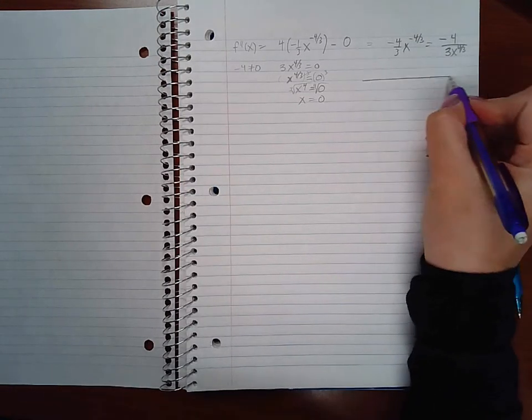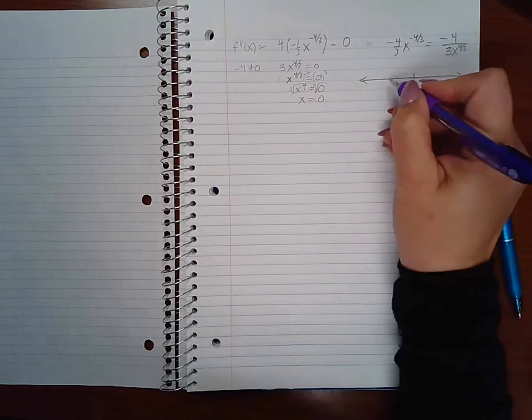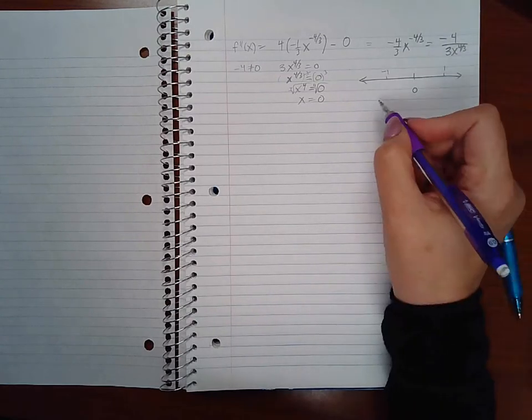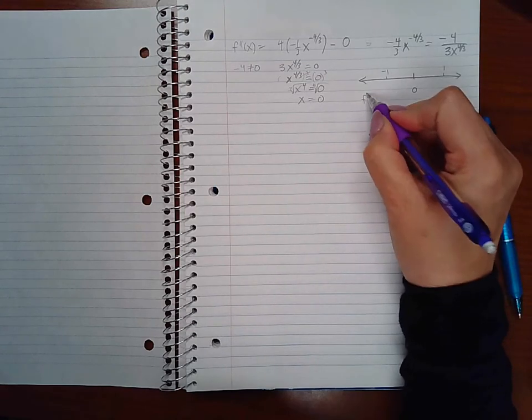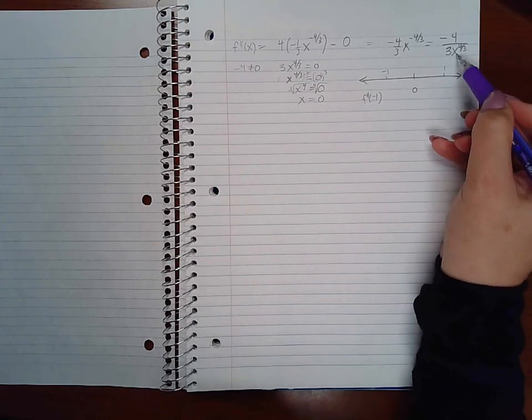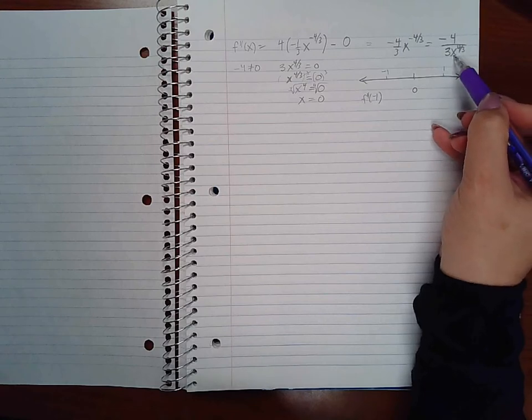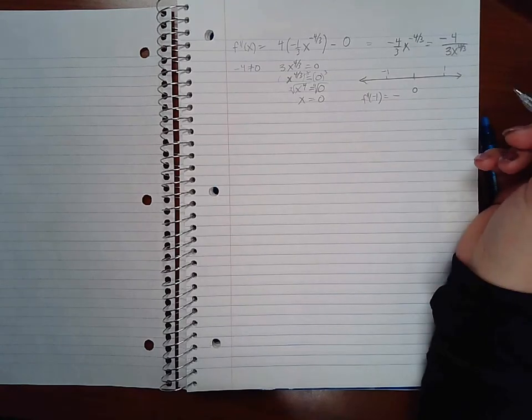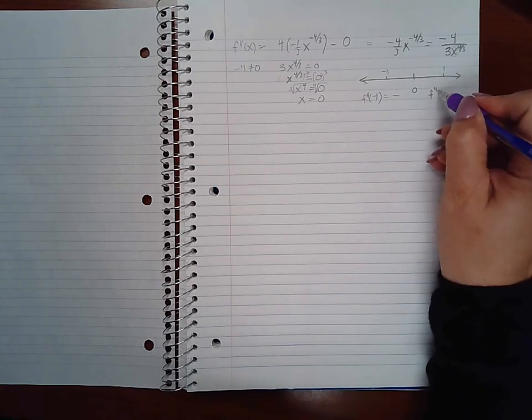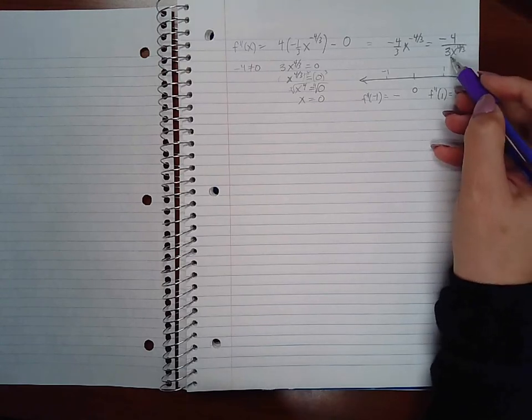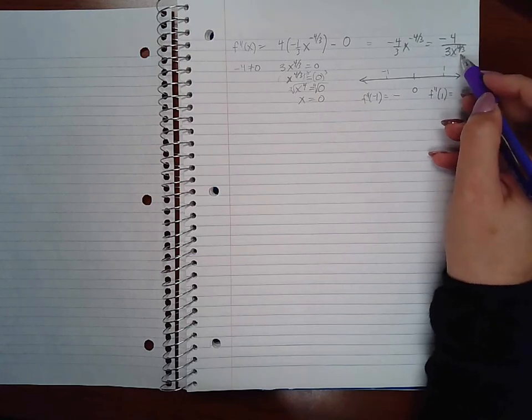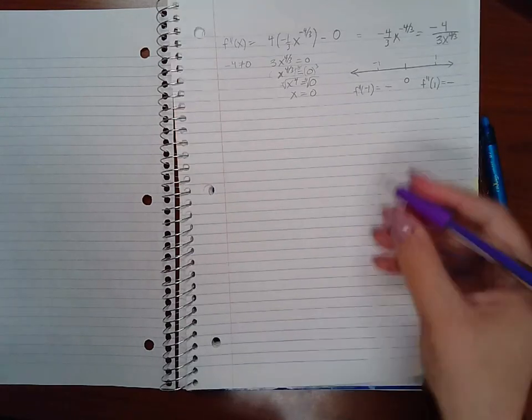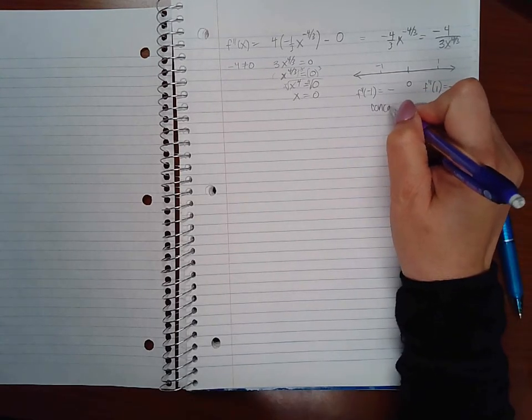So my only critical number for my second derivative is 0. So I'm going to pick a number to the left and pick a number to the right and I'm going to plug them into my second derivative. So if I'm doing the negative, the cube root of negative 1 is negative 1. But negative 1 raised to the 4th power is a positive 1. So I have a negative 4 over 3, which gives me a negative 4/3. Now I'm going to do f double prime of positive 1. Cube root of positive 1 is positive 1. Positive 1 raised to the 4th power is positive 1. Times 3 is positive 3. So I still end up with a negative 4/3. So that means on both sides of 0, I'm concave down.